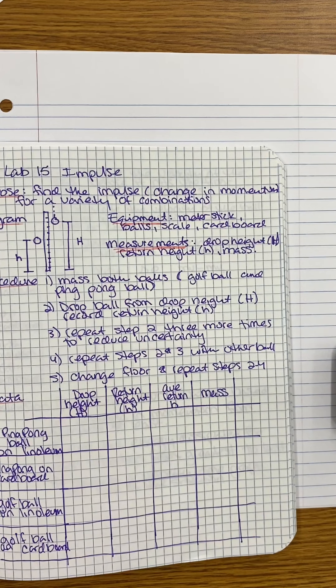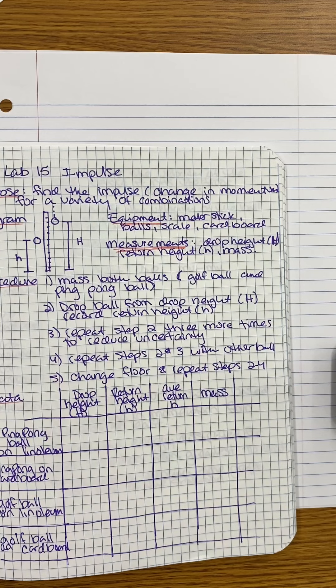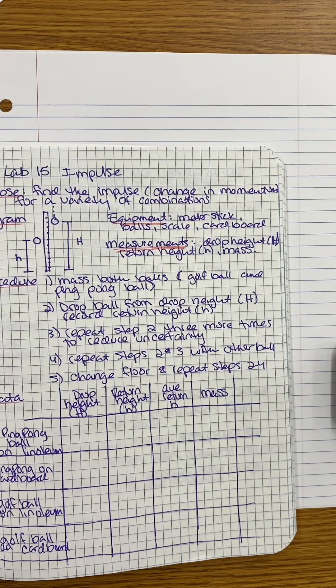My procedure: mass both of the balls, drop from a certain height. You pick the drop height, you record the return height. We're going to do it several times to reduce uncertainty. Then we will do it with the other ball.